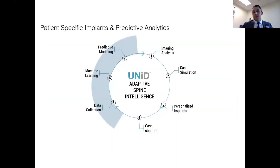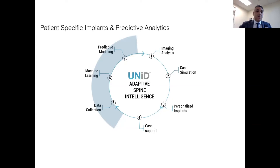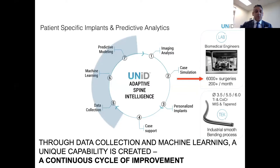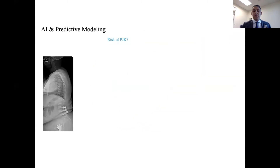This cycle is an important one to understand. Starting at the top right: number one, it all starts with image analysis — getting the measurements, understanding the spinal pelvic parameters. Then once you provide your case strategy, a simulation is made, and the implant — which is patient-specific and personalized — is shipped. After the case, the data is collected: what did you do during the case and what did the post-operative films show? It's a circuitous process — that information circles back and gets fed back into the model. There are about 6,000 surgeries currently logged, with about 200 added per month, so this continuous cycle of improvement is really where it's at.